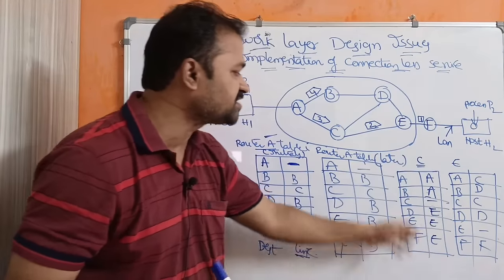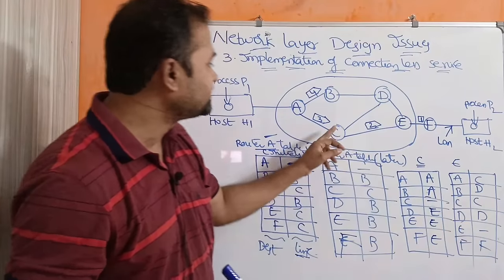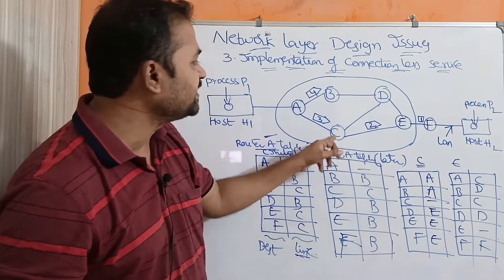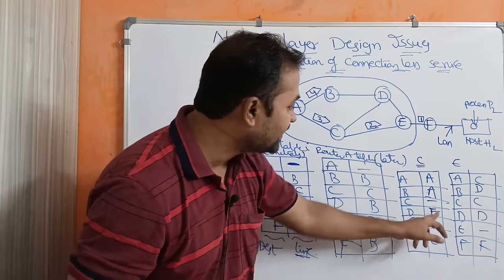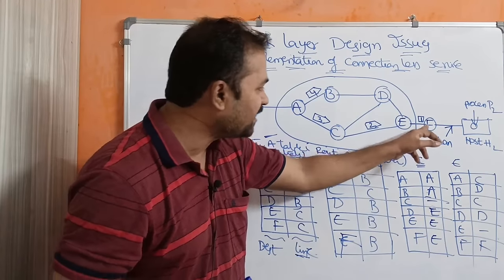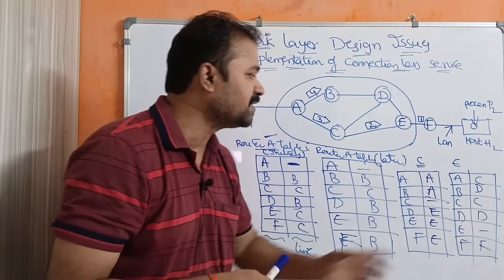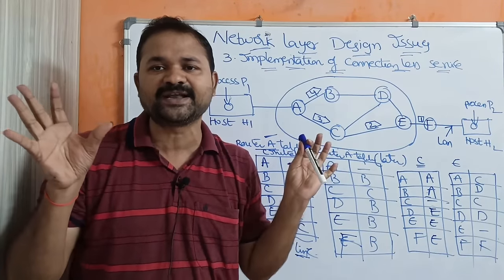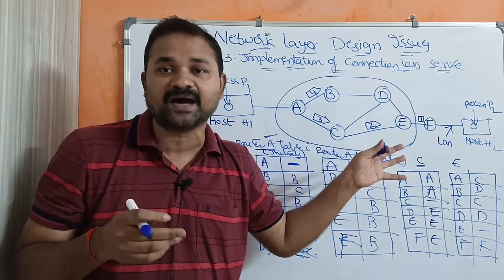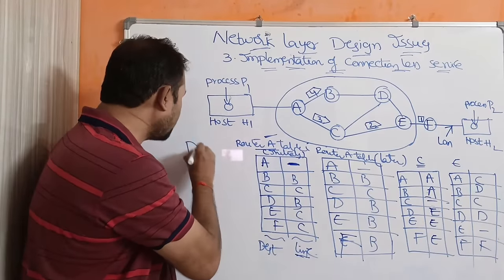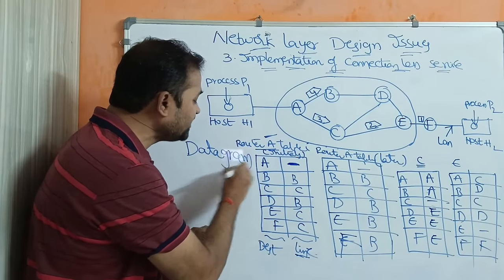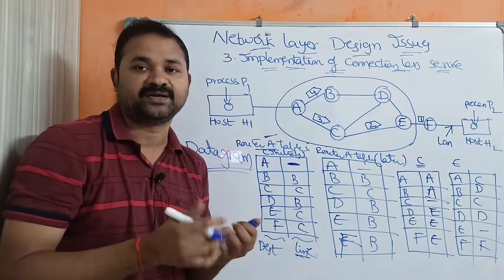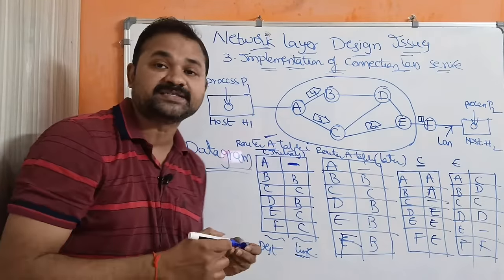Likewise, we have the routing table of C: C transmits to A directly, to B via A, C to D via E, and to E and F via D. Similarly, this is the routing table for E. In connectionless service, the packets are called datagrams, and this network can be called a datagram network.